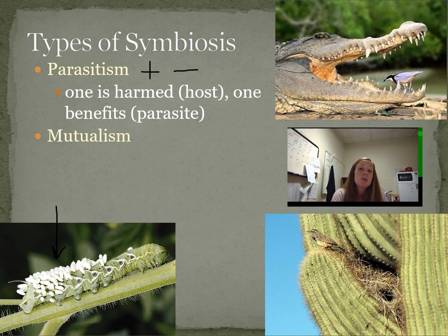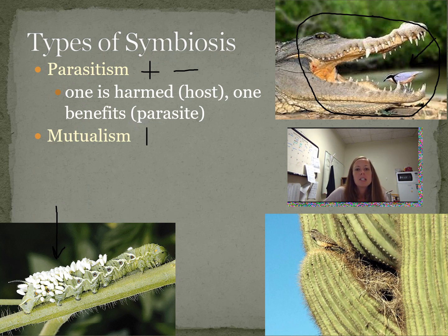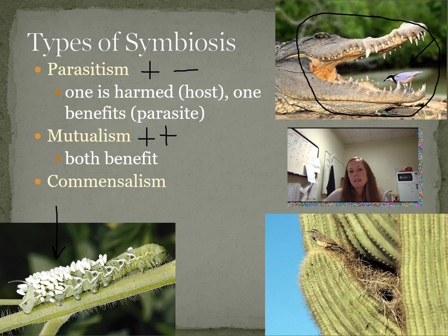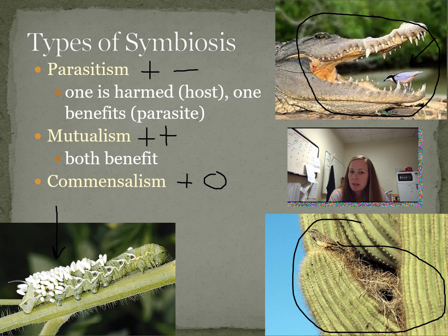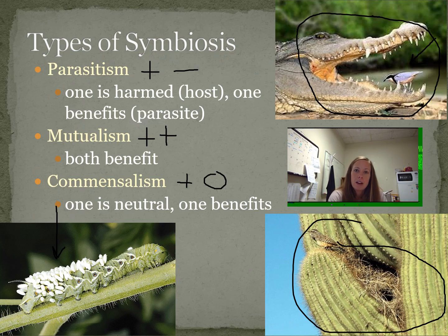The second type of symbiosis is mutualism — both species benefit. Here we have a crocodile and a bird: the bird cleans the crocodile's teeth, which benefits the crocodile, while the bird gets food. Both benefit from the relationship. The last type is commensalism — one benefits and the other has no effect. Here a bird nests in a cactus: the bird gets a home, but the cactus is neither harmed nor helped — it just gets nothing.